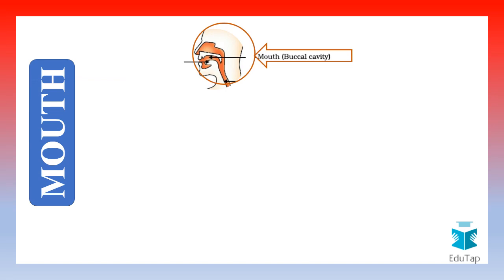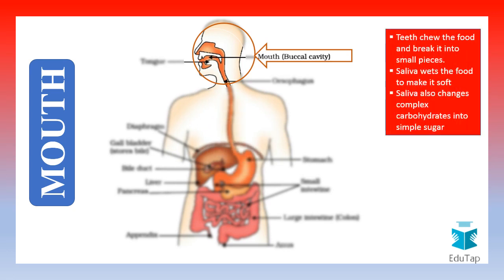Let us understand the different parts of the digestive system. The first one is the mouth. Inside the mouth, the teeth chew the food to break them into small pieces. Converting food into small pieces is important to make its passage easier through the esophagus. The saliva in the mouth wets the food to make it soft, and also converts the complex carbohydrates into simple sugar.